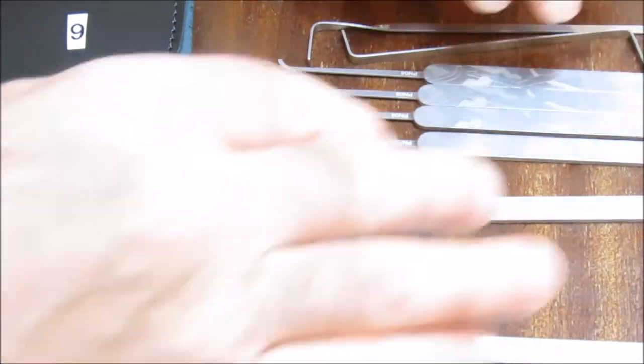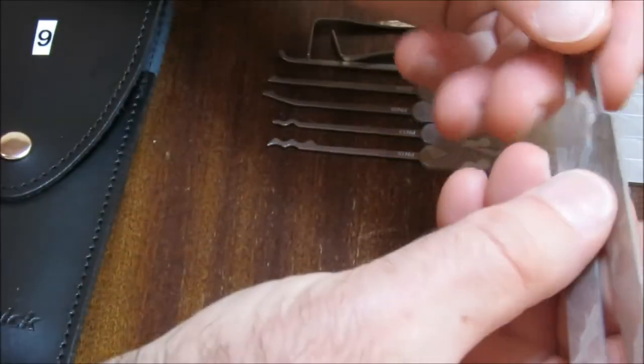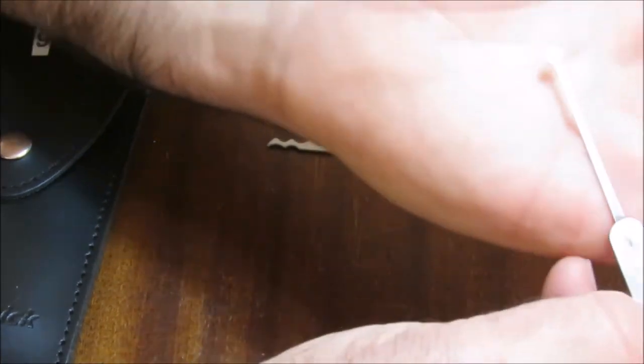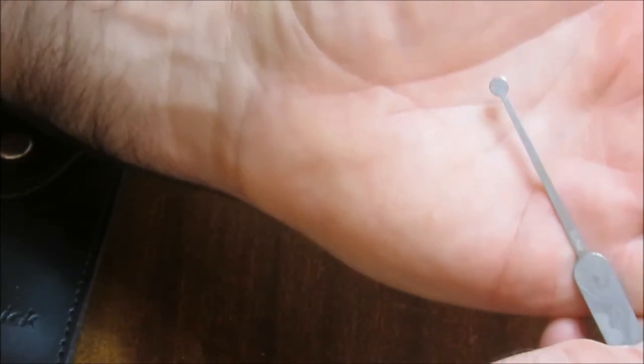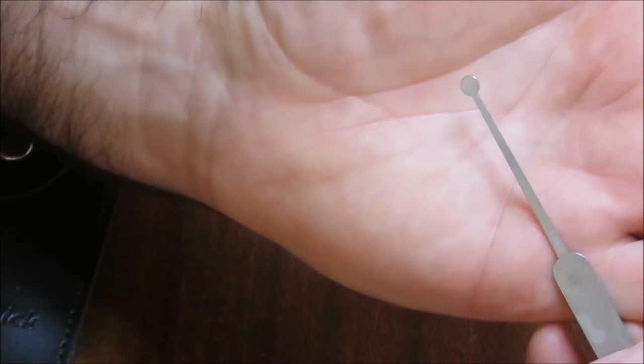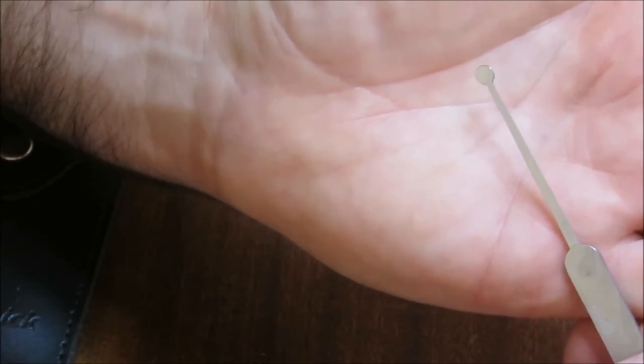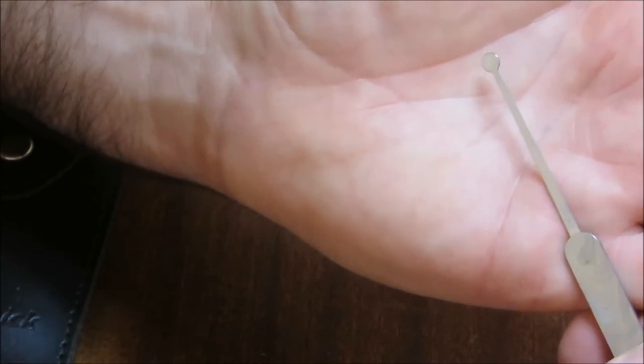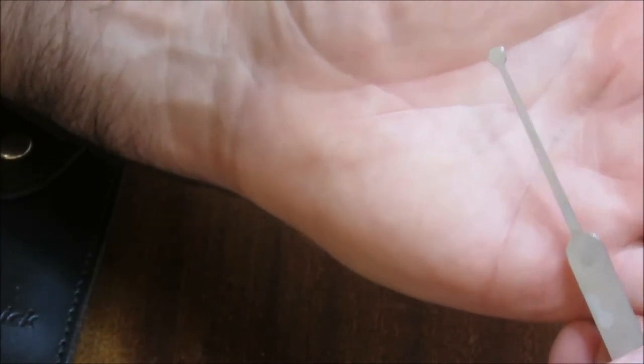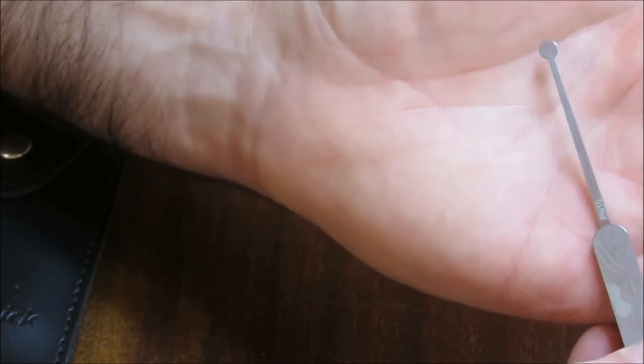Alright, now the last two things in the packet. Slightly less use but still interesting to have. Now this thing here, that little round ball shaped pick, that is designed for wafer locks. So things like old fashioned car doors, things like filing cabinet locks, that sort of low security stuff. Now this isn't a shape that gets used a lot these days guys. In fact, I've never actually used one of these.